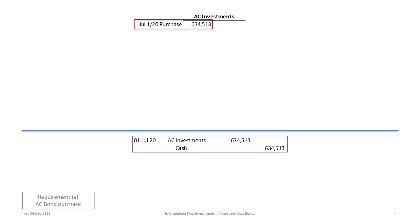Our first entry on July 1st 2020 is to record the purchase of the bonds. We will debit an AC investments account, or amortized cost investments account, for the present value of $634,513 and credit cash for the same amount. If you're not sure where this came from, review tutorial 26 — that'll walk you through the present value calculations. I've started a T-account showing a debit of $634,513.